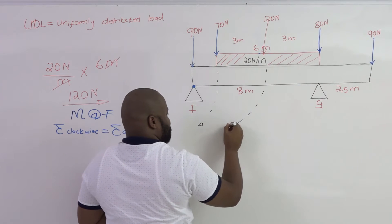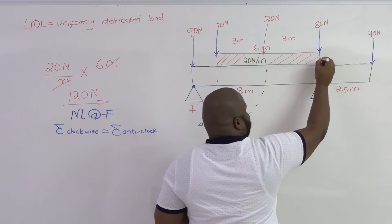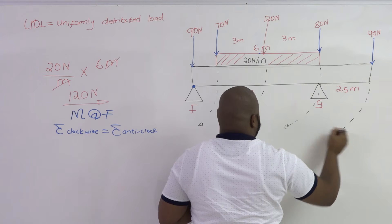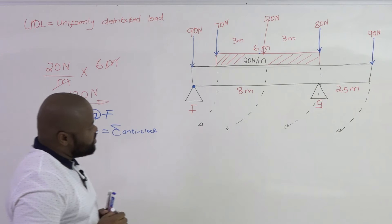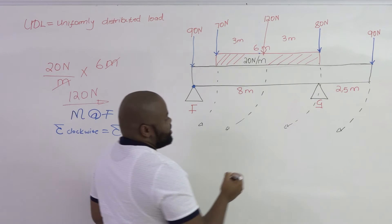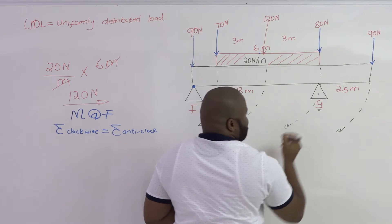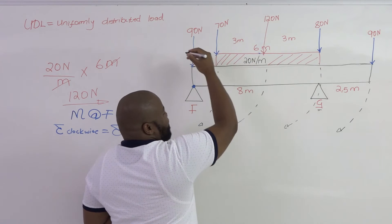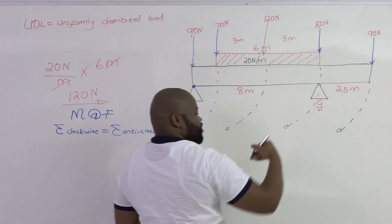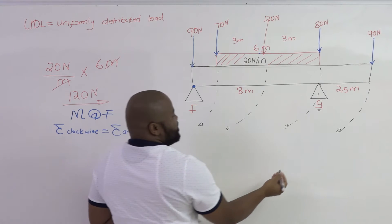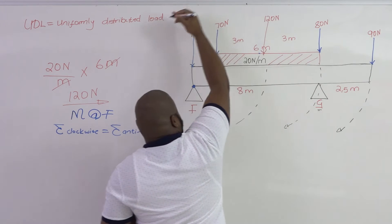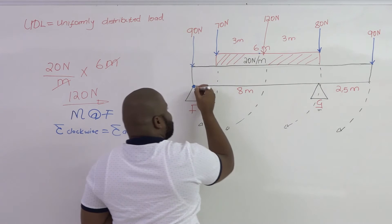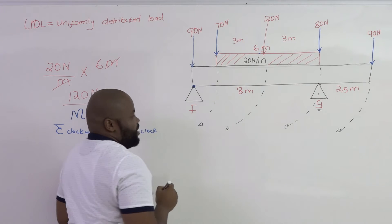120 is going in the clockwise direction, 80 is going in the clockwise direction, so is 90. Our reaction G is pushing against all the forces being applied on the beam, meaning that it is pushing upwards, meaning that it is going to rotate in the anti-clockwise direction upon our fulcrum F.